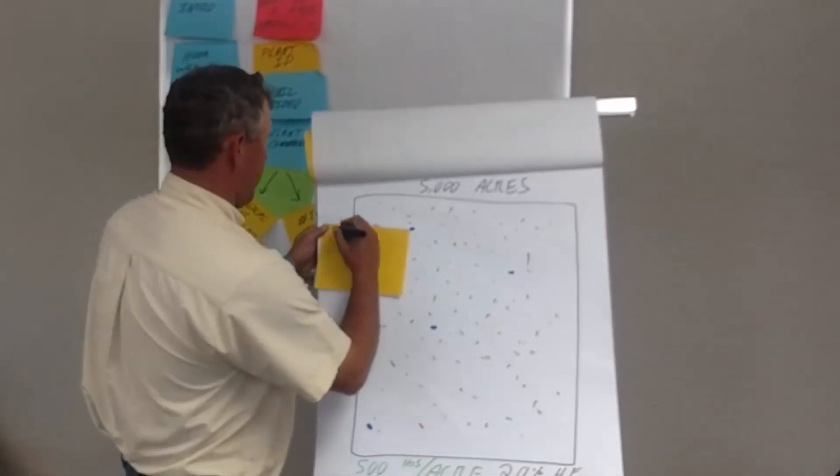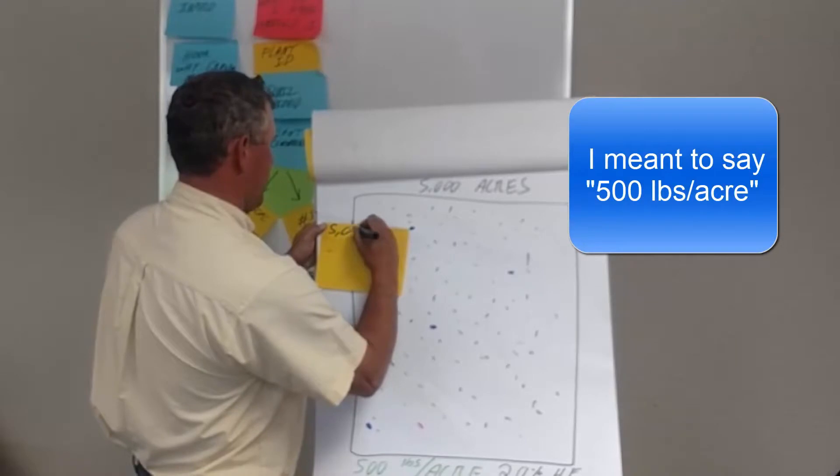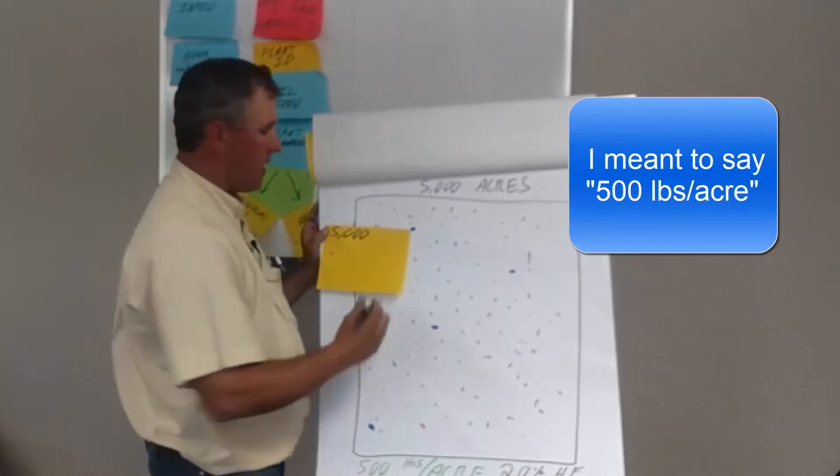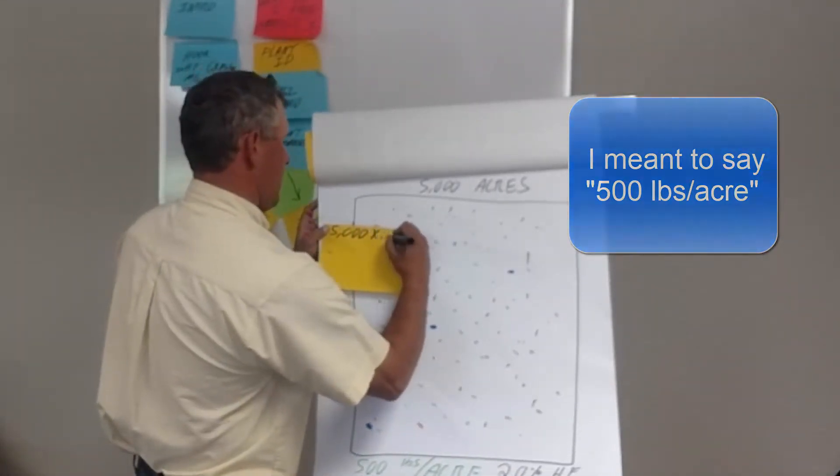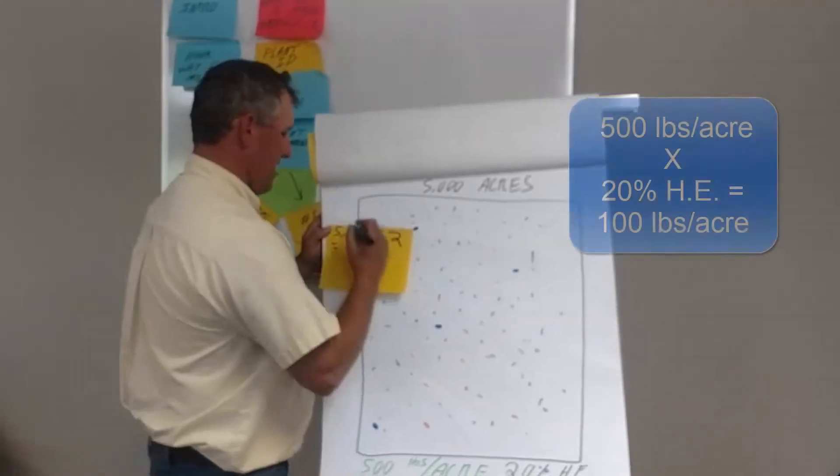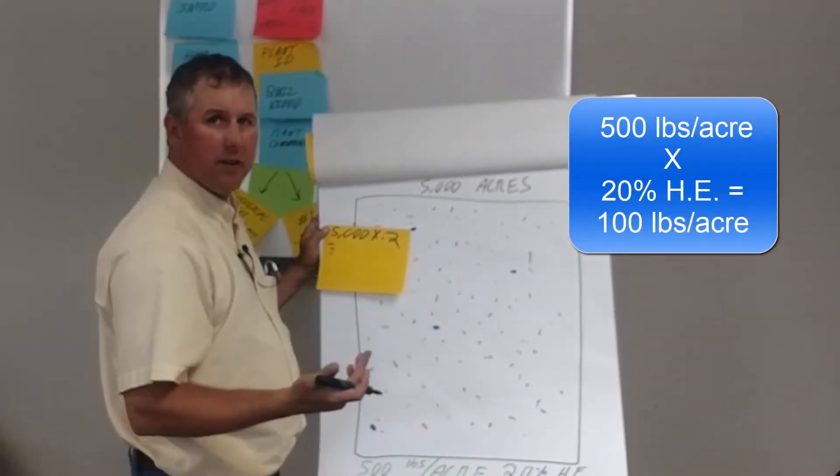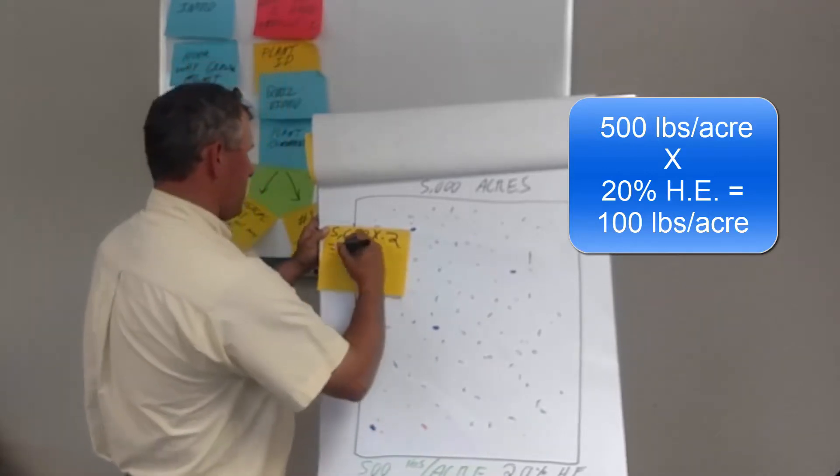Let's do the last one. 5,000 acres. We said we're going to use a 20% harvest efficiency. That means I'm going to put 100 pounds per acre in the belly of my grazing animals.